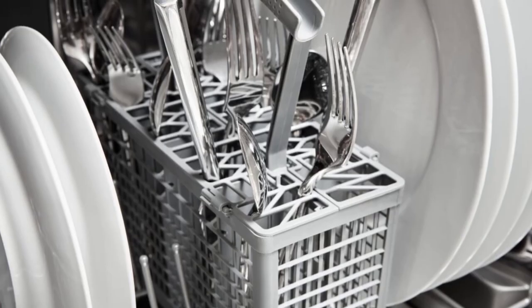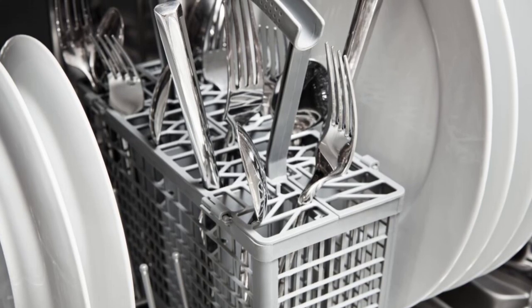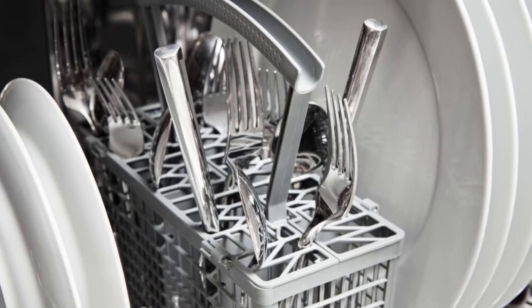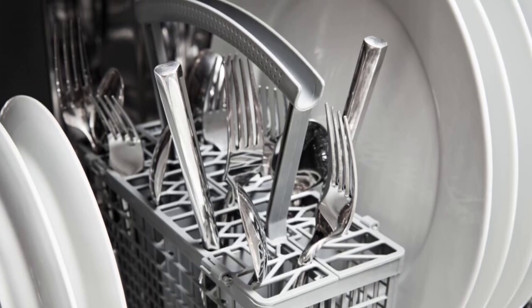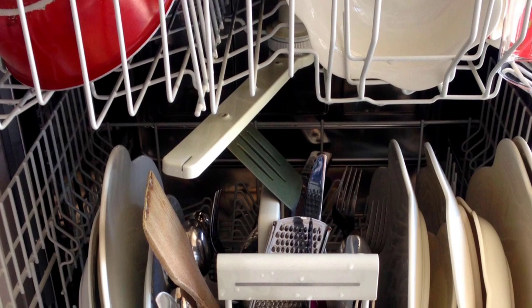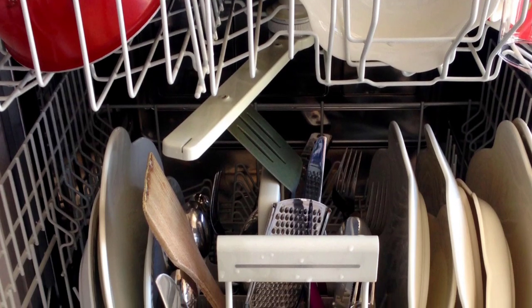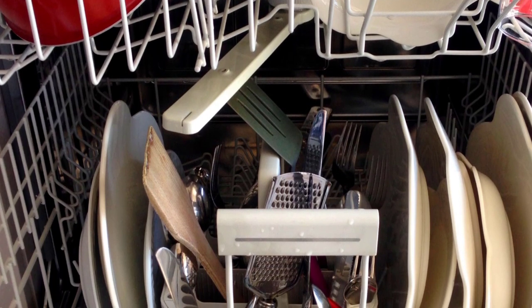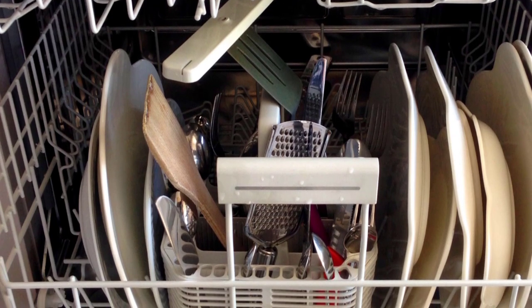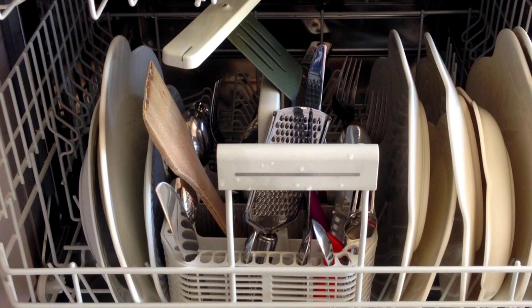Energy Efficiency: Look for a dishwasher that is energy efficient to save on your electricity bill. Check for an Energy Star Rating, which indicates that the dishwasher meets specific efficiency guidelines. Noise Level: Consider the noise level of the dishwasher, especially if you plan to use it in a small apartment or if you have young children or pets. Look for a model that has a low decibel rating to ensure that it won't disturb your daily activities.